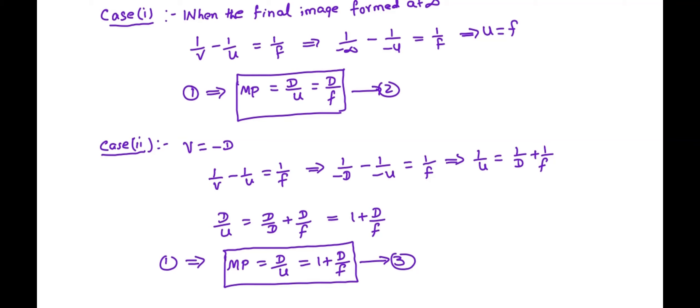So in equation 2, magnifying power is equal to d by f. In equation 3, magnifying power is equal to 1 plus d by f. So in equation number 3, this magnifying power can be maximum compared to the second expression. Here, clearly it is showing that magnifying power is inversely proportional to the focal length of the simple microscope or convex lens.